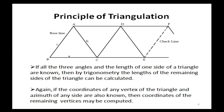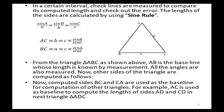Principle of triangulation: if all three angles and the length of one side of a triangle are known, then by trigonometry the lengths of the remaining sides can be calculated. If the coordinates of any vertex and the azimuth of any side are known, then the coordinates of the remaining vertices may be computed. Check lines are measured to compare computed lengths and check errors. The lengths of sides are calculated using the sine rule: sin A / a = sin B / b = sin C / c. Thus, AC = b = c · sin B / sin C, and BC = a = c · sin A / sin C.